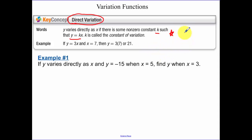You can also think about it like this: if we have y equals kx, when we solve for k we get y over x is equal to k. So when we're doing an example, your constant of variation is always y over x.